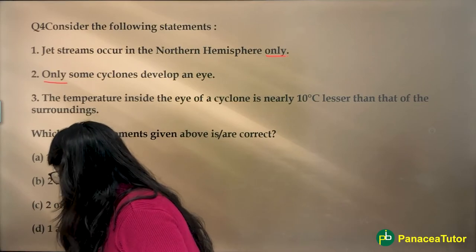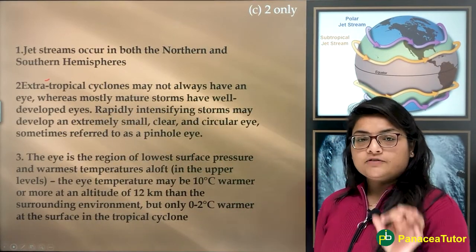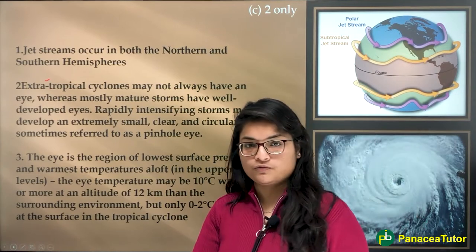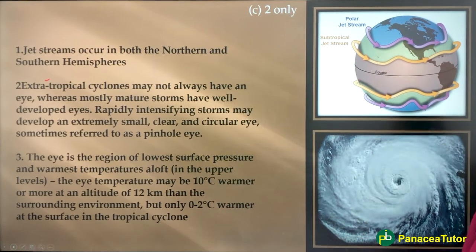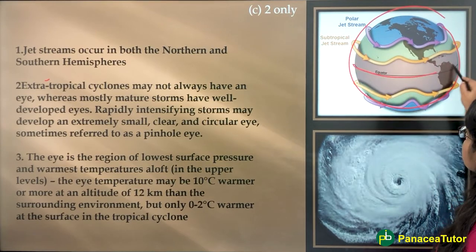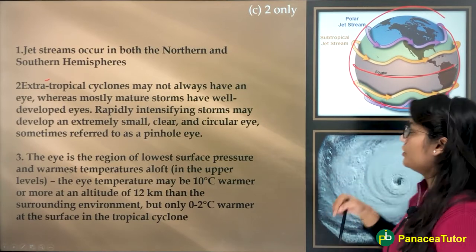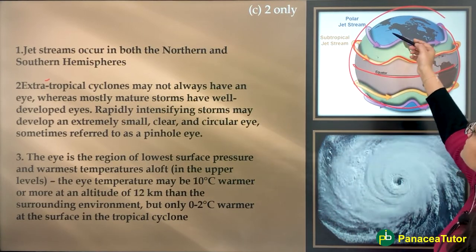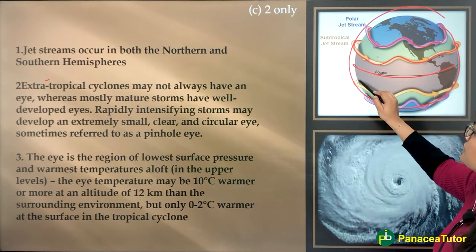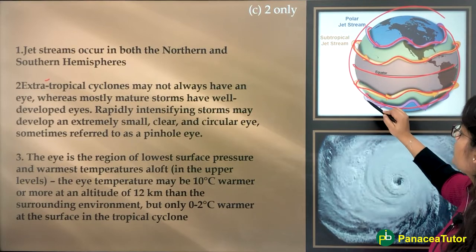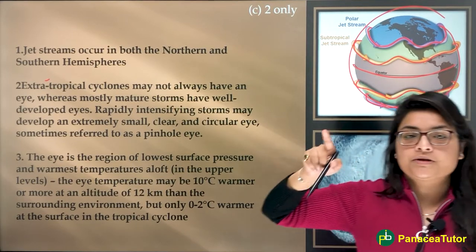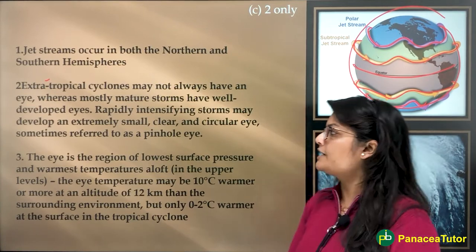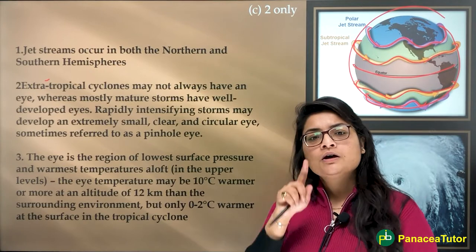If you have ever observed the diagrams given in your NCERTs, the first statement is wrong — jet streams occur in both the Northern and Southern Hemispheres. There are the subtropical jet stream and the polar jet stream, and the same pattern occurs in the Southern Hemisphere as well. So if you have seen a picture in NCERTs, you would have definitely cancelled out that option.